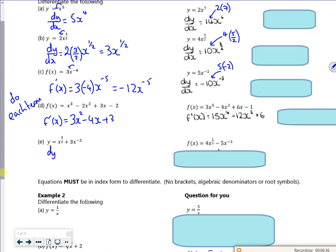So I've got dy by dx. So I'll bring the power to the front, so that's 5 over 2, isn't it? Take one off the power is 3 over 2. Bring the power to the front is minus 2. Take one off the power is minus 3. So that would give us 5 over 2, x to the power 3 over 2, minus 6x to the minus 3.